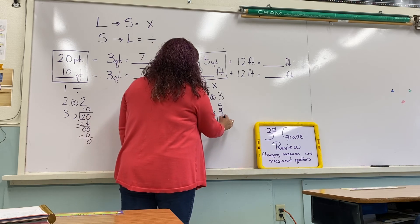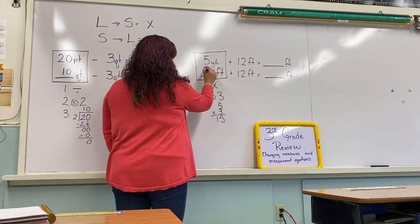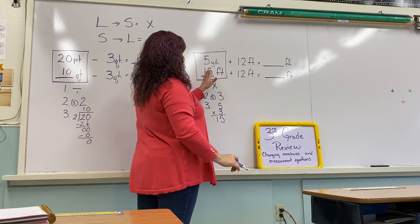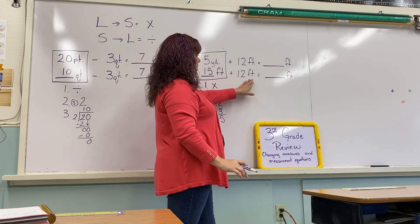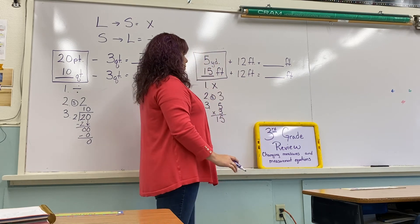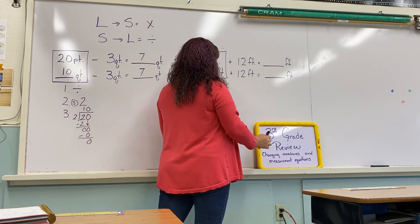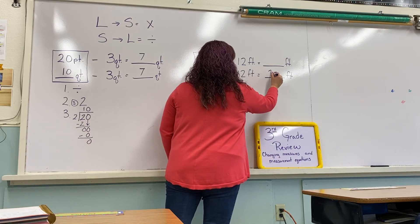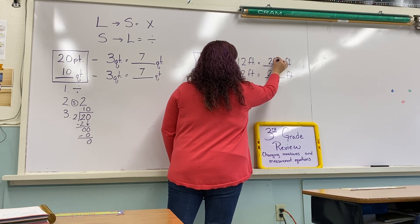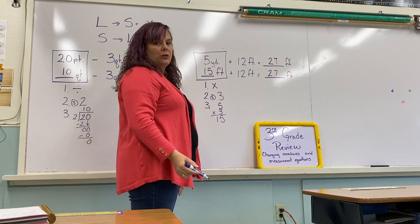15 — very good! So that's our answer, and it goes back up in our problem. Now we can solve: 15 feet plus 12 feet equals how many feet. Very good — that's 27. Write your answer, and write it on the top line as well so that you have it in both places.